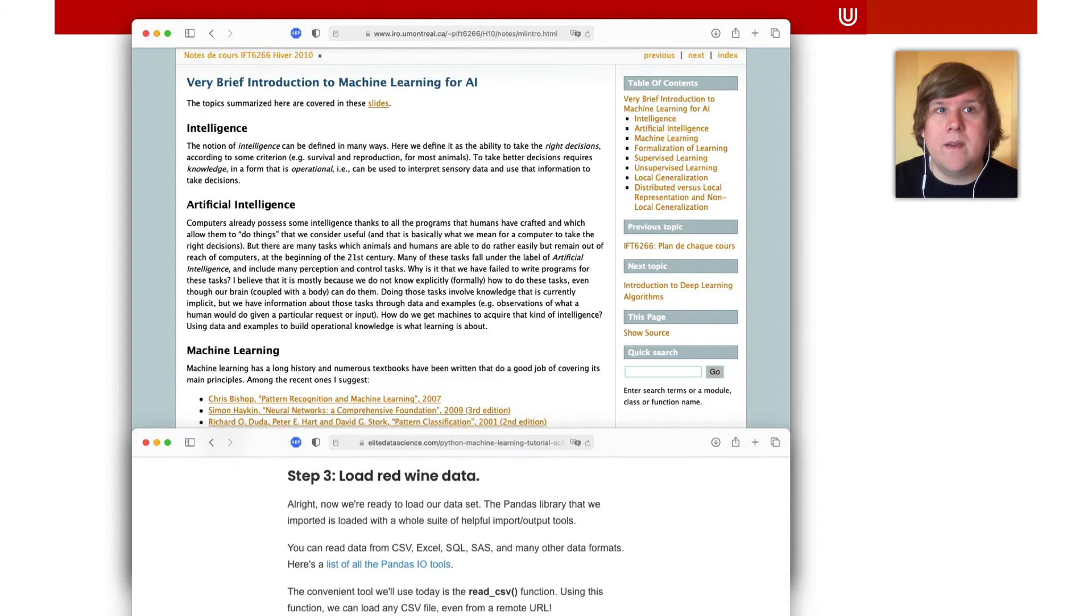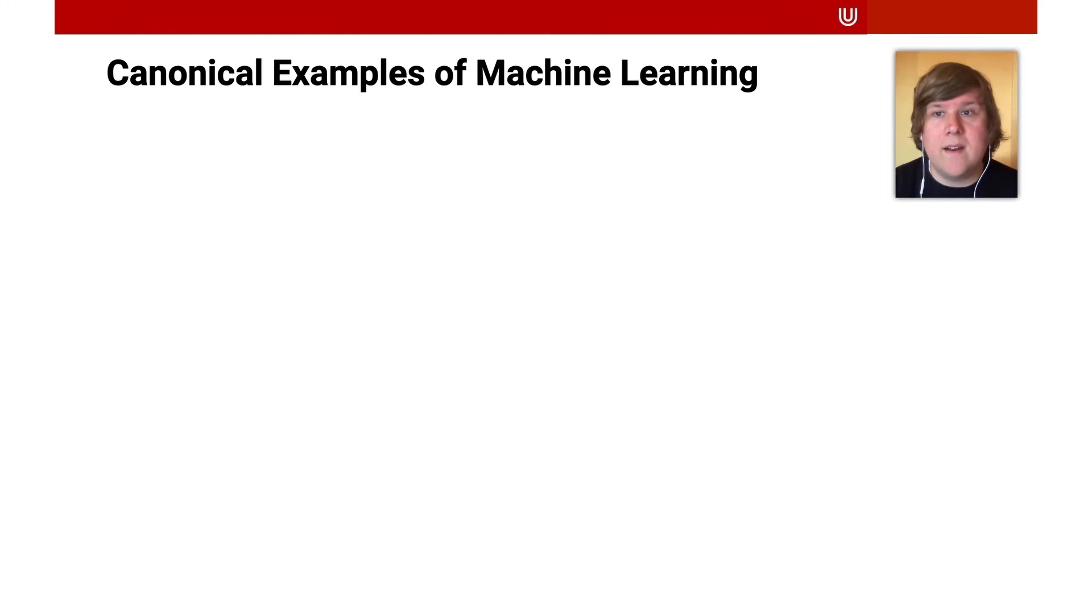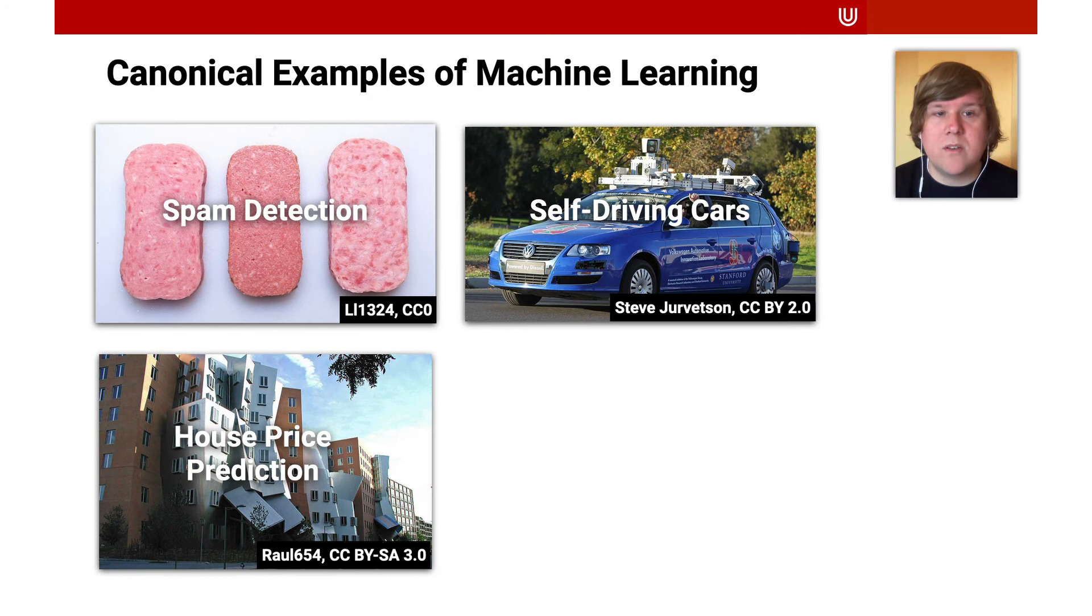We also identified a number of canonical examples that are frequently mentioned in machine learning tutorials. These include the detection of spam, self-driving cars, the prediction of housing prices, and playing the game Go.